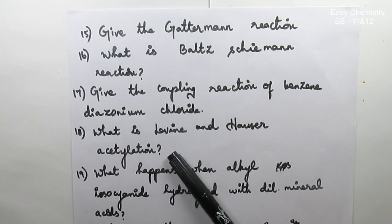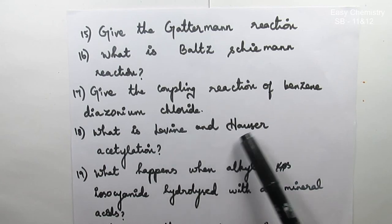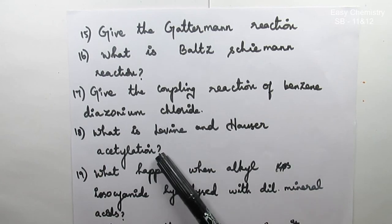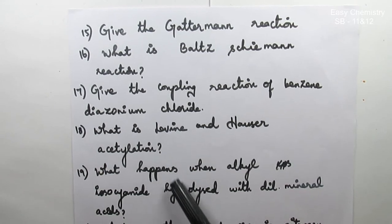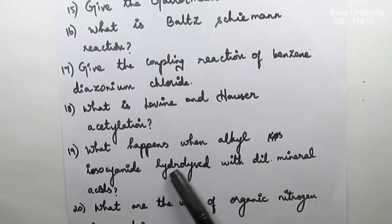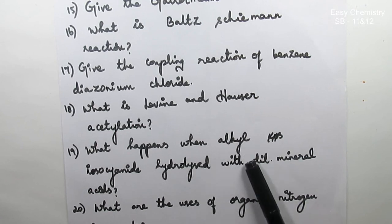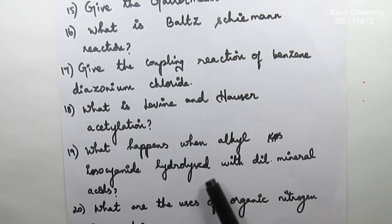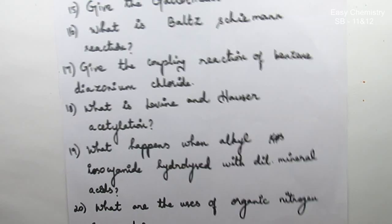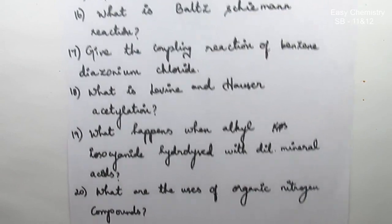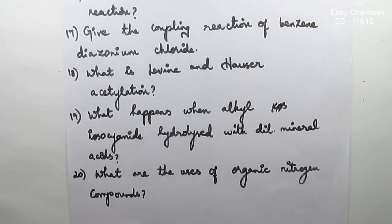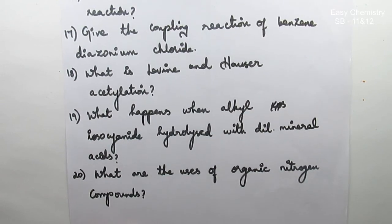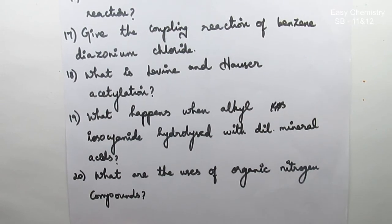Question number 18: What is the Levine and Hauser Acetylation? Question number 19: What Happens When Alkyl Isocyanide is Hydrolyzed with Dilute Mineral Acid? Question number 20: What are the Uses of Organic Nitrogen Compounds? These are the 20 questions.